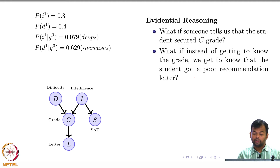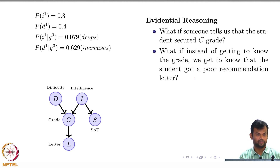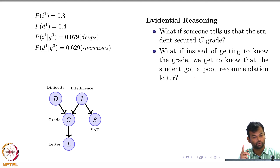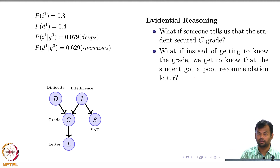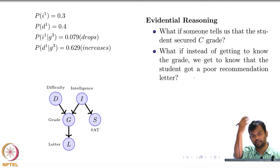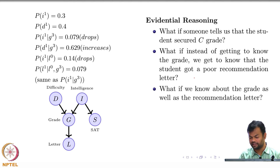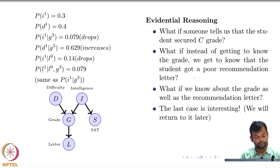What if instead of knowing the grade, you know that the student got a poor recommendation letter? Then your reasoning in plain English would be: a poor recommendation letter means the grade was poor, which means the intelligence was not high. So the probability that the student is intelligent would drop—and various other such reasonings can be done.